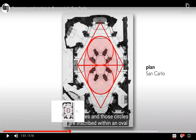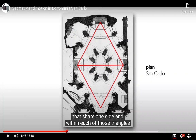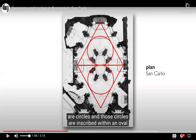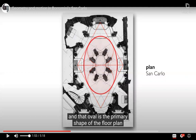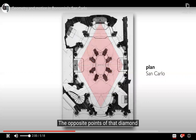Let's draw out the geometric structure together. There are two triangles that share one side, creating a diamond. Within each of those triangles are circles, and those circles are inscribed within an oval. That oval is the primary shape of both the floor plan and the dome above.